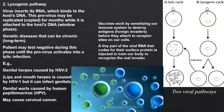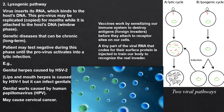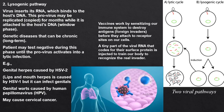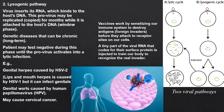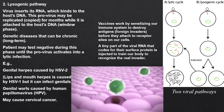Our immune system builds up, and it's ready and waiting — its one purpose is to kill and destroy anything that has that surface marker. So here you see COVID being destroyed before it can attach. They want to attach to our receptors, but we can stop them. We can even destroy our own cells that are infected.